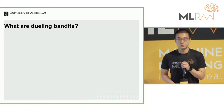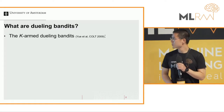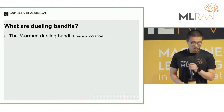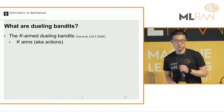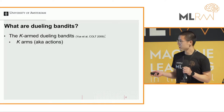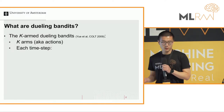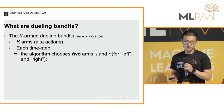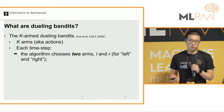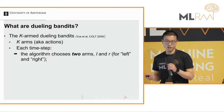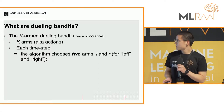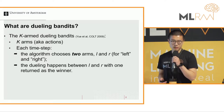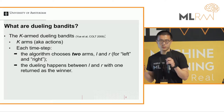So what are the K-Arms Dueling Bandits? Essentially you have K arms, where each arm is also an action. At each time step, you ask the algorithm to choose two arms, L and R — L for the left arm, R for the right arm — and then you compare these two arms.